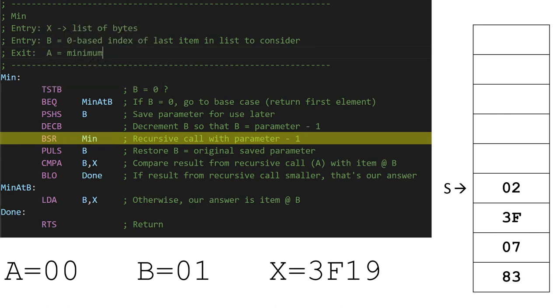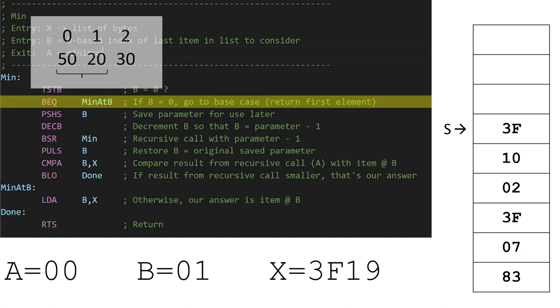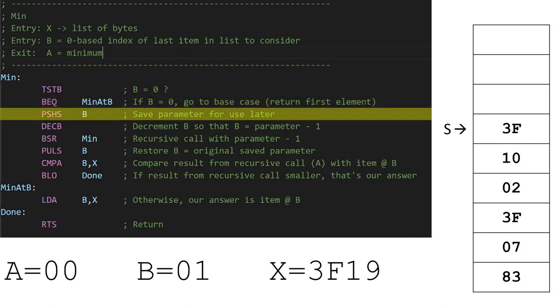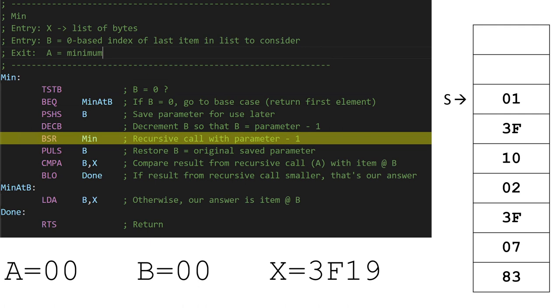Now it's time for the recursive call. Let's actually step into that call to see how it functions. Notice the stack jumped up another two slots. This time it's remembering where we were in the first call to min, in preparation for making the second call to min. Again, it tells us where to return when this second call to min is complete. Now B is 1, as we're only looking at the first two items. Again, we ask if B is 0. It's not. So again, we push B's current value to the stack, decrease B from 1 down to 0, and we recursively call ourselves again.